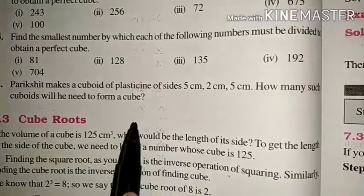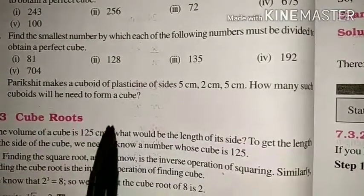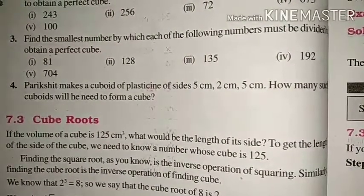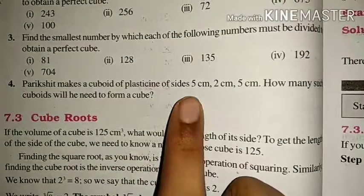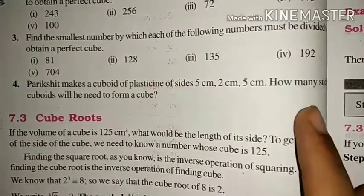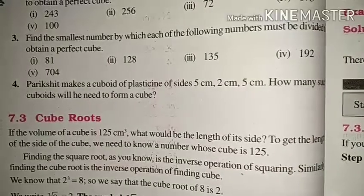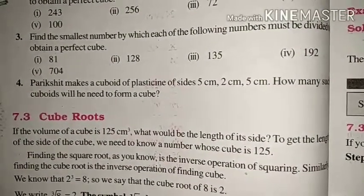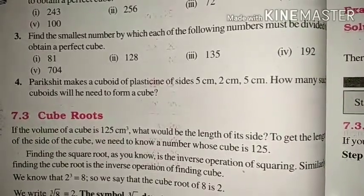What do we need to know in this question? That Parikshit is making a cuboid of plasticine, which has sides of 5 cm, 2 cm and 5 cm. Now, we need to find how many cuboids we need to form a cube.